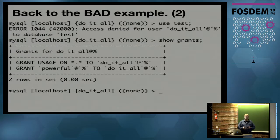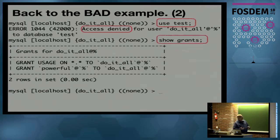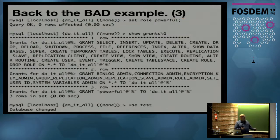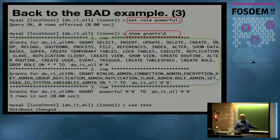Let's go back to the bad example from the beginning. We were in the condition where the powerful role was assigned but not active yet. The thing we need to do is SET ROLE powerful. Then SHOW GRANTS will show all the privileges that come with that role, and finally you can enter the database.